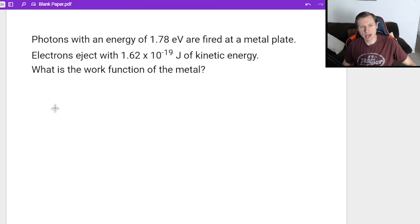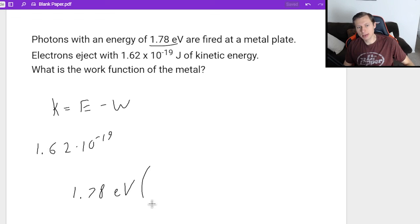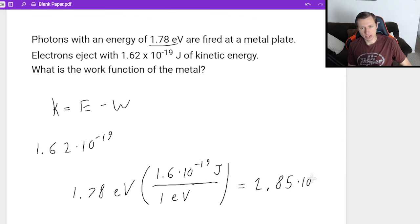So this time we say that k equals e minus w, and I'm solving for w this time. Now we already have kinetic energy, it's 1.62 times 10 to the minus 19th. Energy I give us in electron volts, we need to know how to convert from electron volts to joules, because there is a conversion factor. The conversion factor is actually the exact same thing as the charge on an electron or proton. It's 1.6 times 10 to the minus 19 joules in one electron volt, which means when I plug this conversion in my calculator, I will get an energy of 2.85 times 10 to the minus 19th.